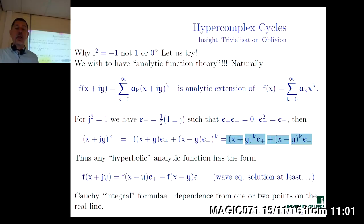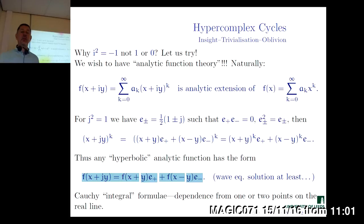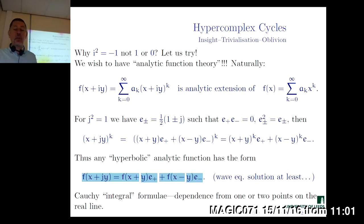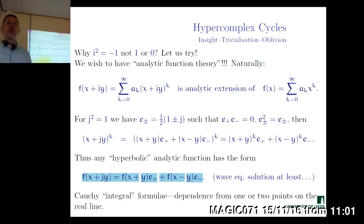That means if we apply the analytic extension in terms of series, such an analytic function will be expressed simply in terms of these idempotents — nothing else but a combination of f(X+Y) and f(X−Y). This is rather simple. For any real function we may build such an expression as the Taylor expansion in terms of double numbers. This produces the fundamental solution of the wave equation on the line.